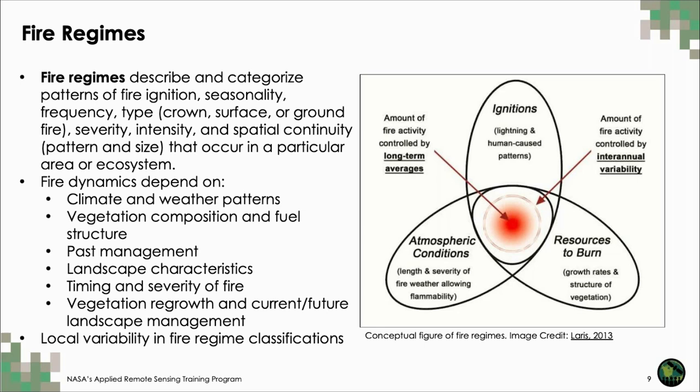It's also important to note that there's local variability in fire regime classifications. On the right, we have a conceptual diagram of a fire regime. Note that the three factors which determine a regime are ignition sources, atmospheric conditions, and resources to burn, and these factors dictate fire interannual variability and long-term averages.